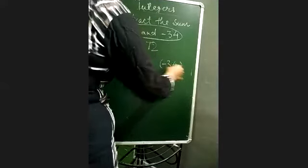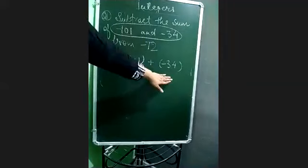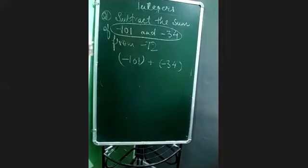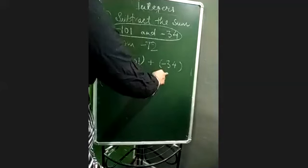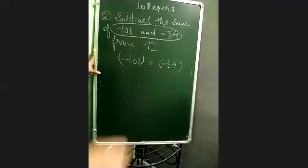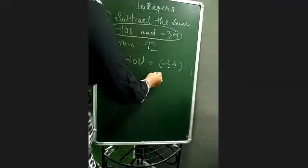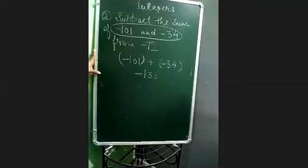Because two signs we cannot take together. So minus 101 and minus 34 - let us add it now. Both have a negative sign, which means you have to add both and take a common sign. When you take the common sign, it will be 5, then 1, giving 135. So the number would be minus 135 when you add it.